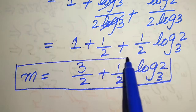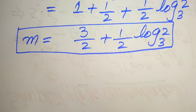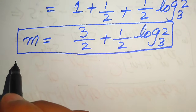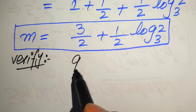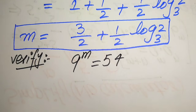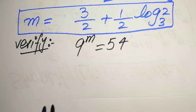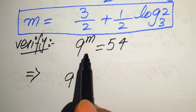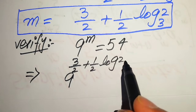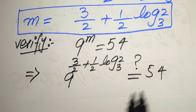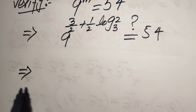Now we verify whether this value of m satisfies the original equation 9 to the power of m equals 54. We substitute the value m equals 3 over 2 plus 1 over 2 times log base 3 of 2 into the left-hand side and check whether it equals 54. We apply the exponent law to break the exponent.